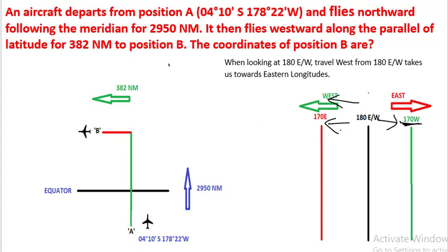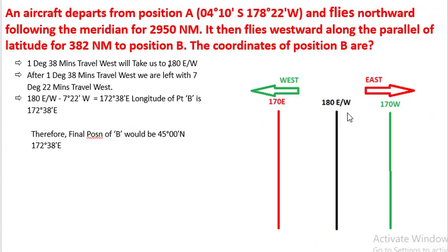Now the aircraft original position is somewhere here, which is 178 degrees 22 minutes west. So from here the aircraft will travel this much.